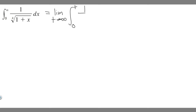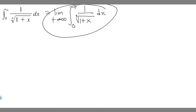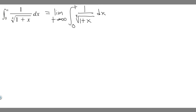Then we just have our integrand: 1 over the 4th root of 1 plus x dx. So this is what we have to solve now. We want to solve this integral and then evaluate it as t goes to infinity. The next step is to just solve this integral from 0 to t of 1 over the 4th root of 1 plus x dx.